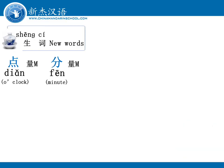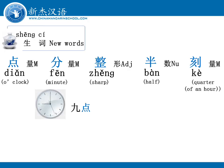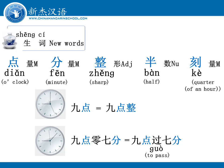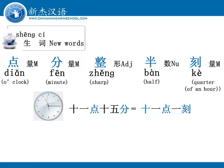点、分、整、半、课都是表示时间的词语。例如，这是九点，或者九点整。 这是九点零七分，也是九点过七分。